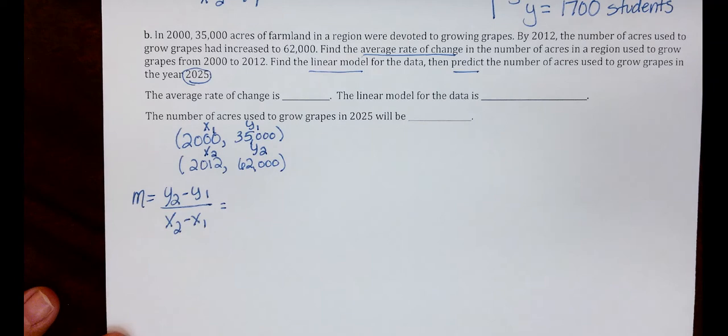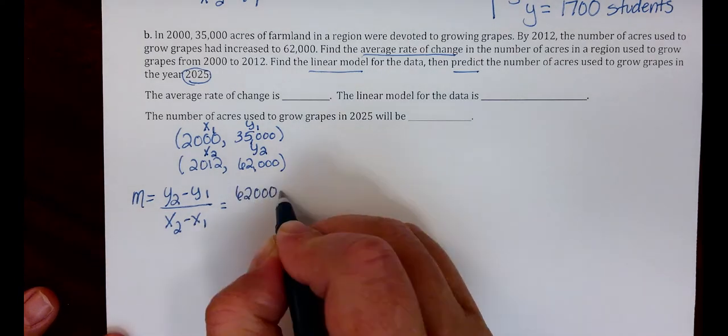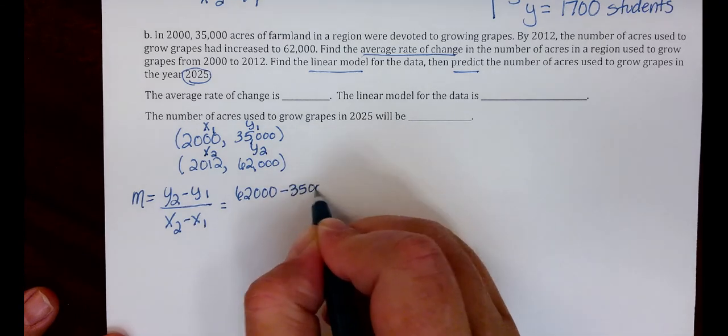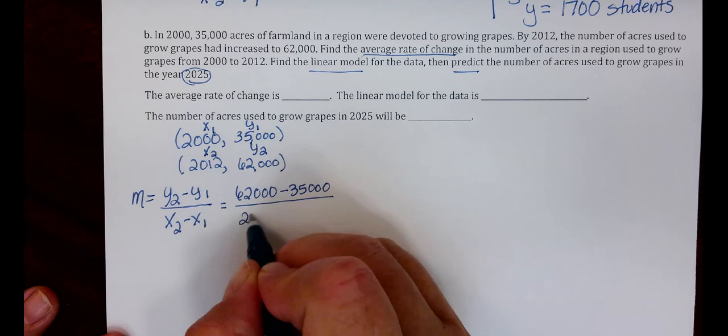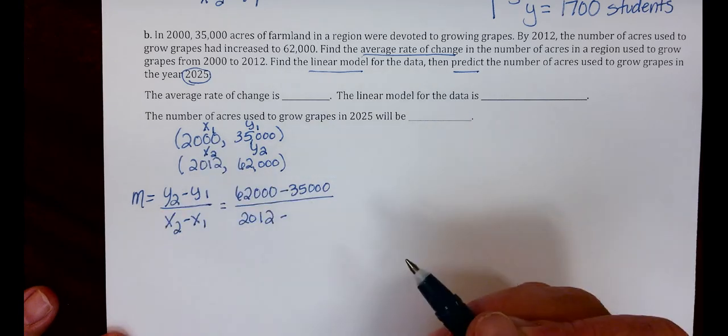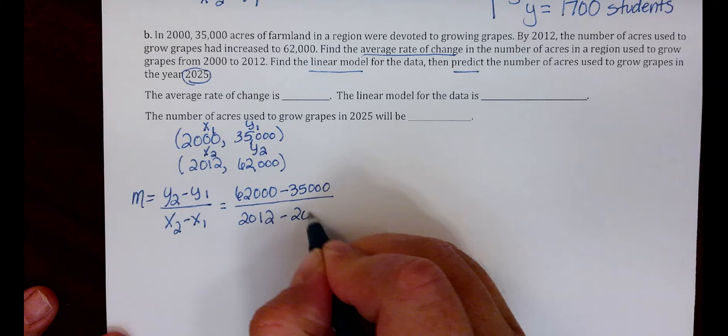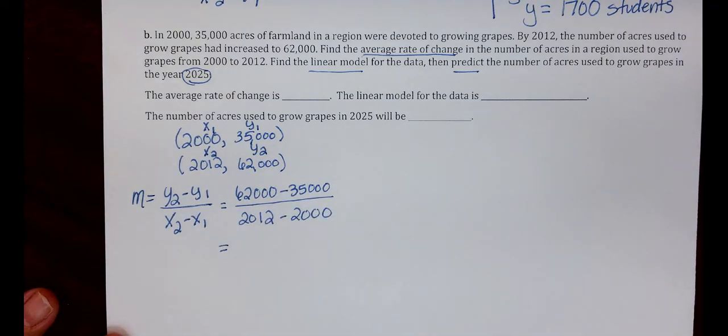Let's plug in. Y2 is 62,000 minus Y1, 35,000, all over X2, which is 2012, minus X1, which is 2000.